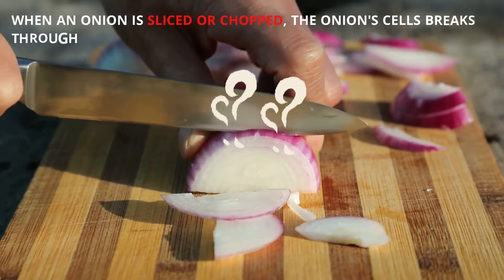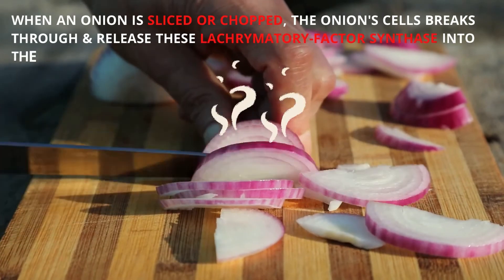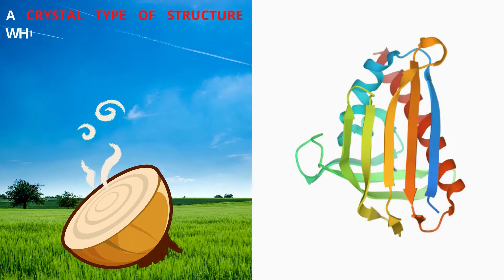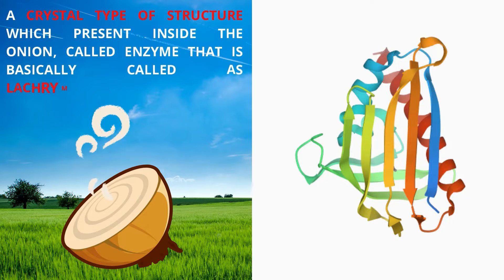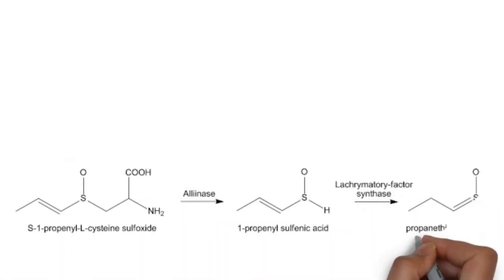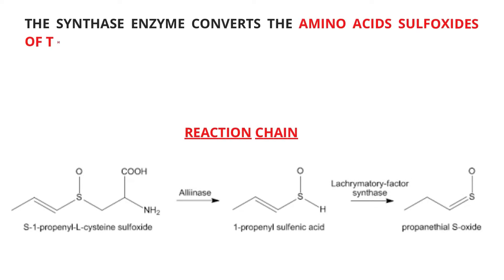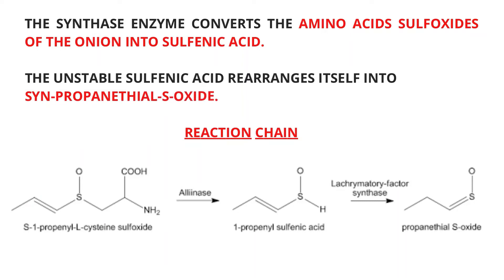When an onion is sliced or chopped, the onion cells break through and release lacrimatory factor synthase into the air — a crystal-type structure present inside the onion, called an enzyme, known as lacrimatory factor synthase. The synthase enzyme converts the amino acid sulfoxides of the onion into sulfenic acid. The unstable sulfenic acid rearranges itself into syn-propanethial-S-oxide.